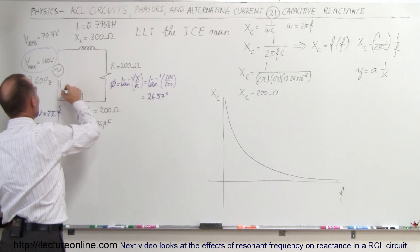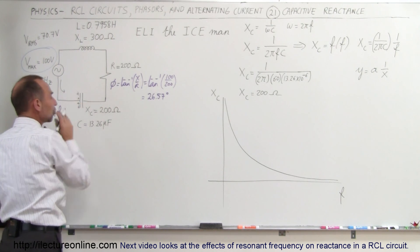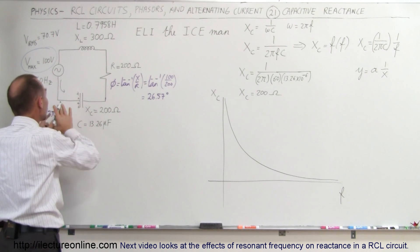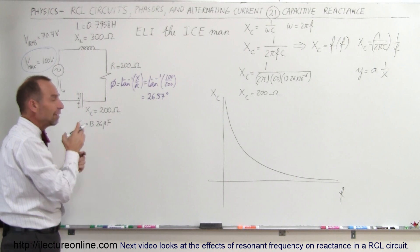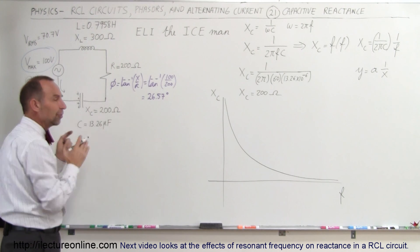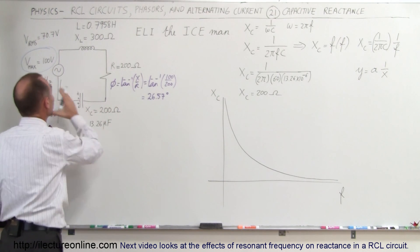We get charges piling up, and as more charges accumulate, they push back against the current and slow it down. If the oscillation is very slow, the capacitor can fill up with charge, becoming a very large impedance or reactance towards the current.